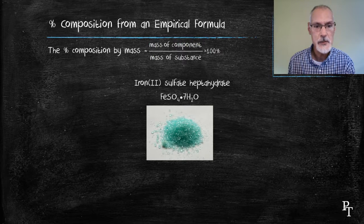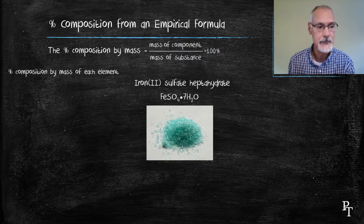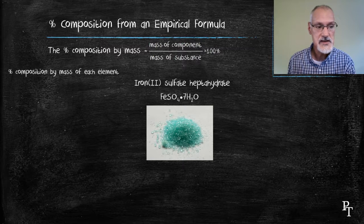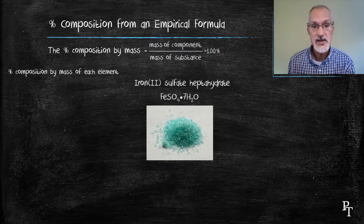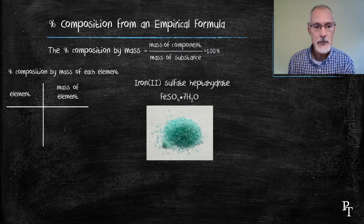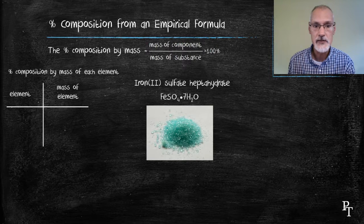So this particular substance has in it the elements iron, sulfur, oxygen, and hydrogen. And I want to determine what the percentage is by mass of each of these. I begin by setting up a chart where I take a look at each element individually.